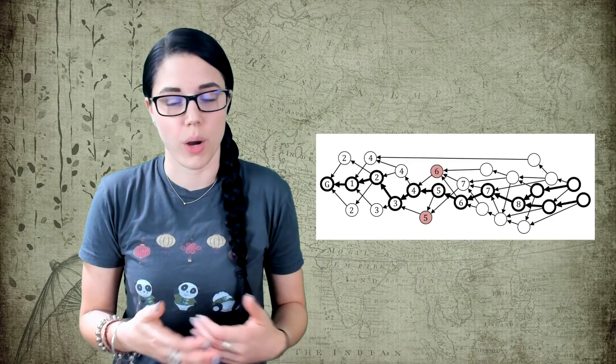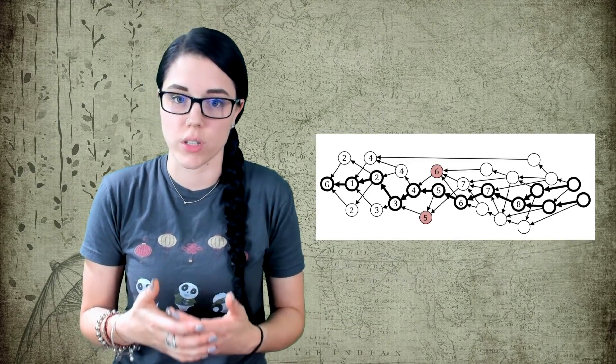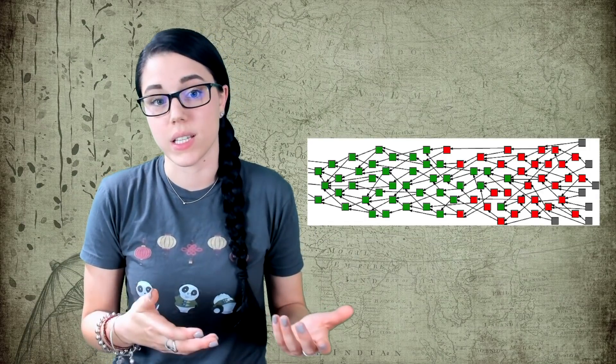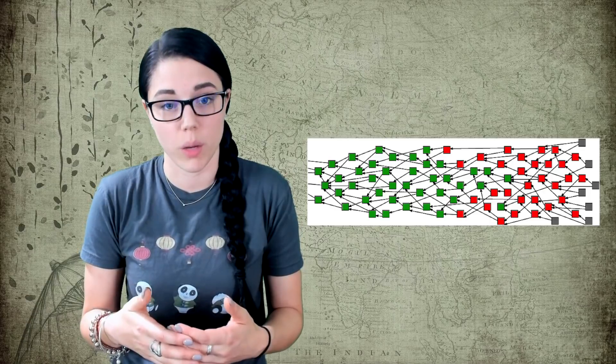Byteball achieves consensus by relying on a main chain comprised of honest, reputable, and user-trusted witnesses to agree on the state of the network, while IOTA achieves consensus by using very small amounts of PoW, or proof of work, on each transaction, requiring the issuer of the transaction to confirm two other transactions.